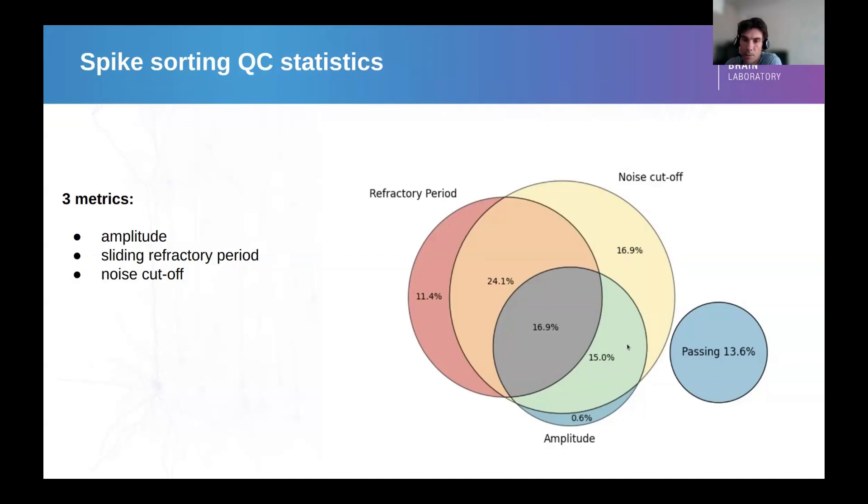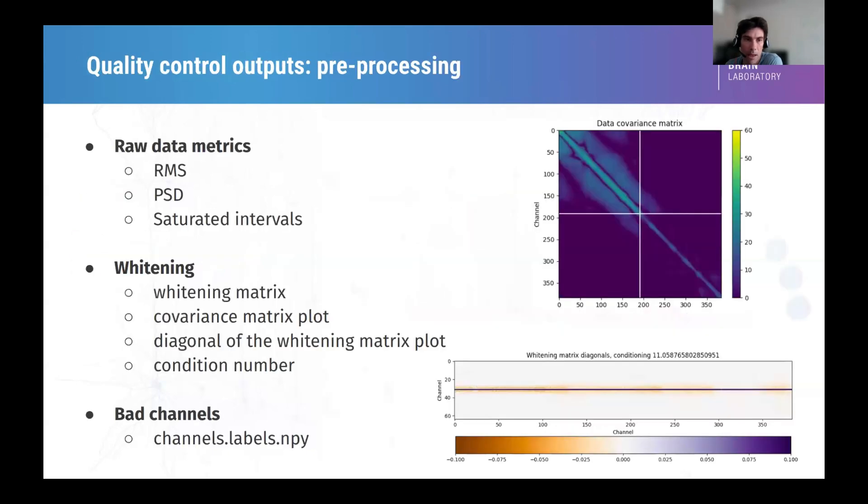Next, I'm going to go over what are the outputs of the spike sorter now, and especially the quality control outputs. This will be part of the assignments. We output some figures, some raw data metrics that I've shown before. But we also output some figures about the covariance matrix. We output the covariance matrix heatmap, and we output a heatmap of the diagonal parts of the whitening matrix. This allows us to see if there is an issue, especially with the condition number. If this is higher than 50, we probably have issues, and this is something to be looked at. This is a dataset to be looked at.